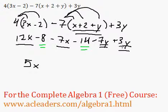Negative 7y, plus 3y. Negative 7 plus 3. Minus 4y. Or negative 4y, basically.